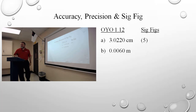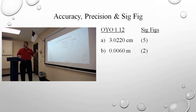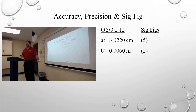How many? Two. Leading zeros are not significant. So everything up to here is not significant because this is the first non-zero digit. Trailing zeros are significant, so there are two.